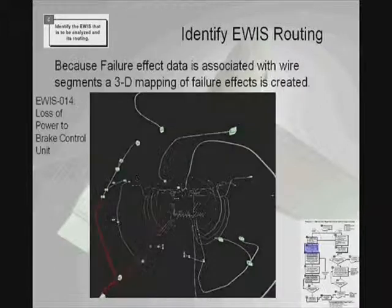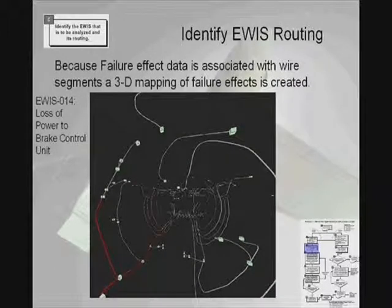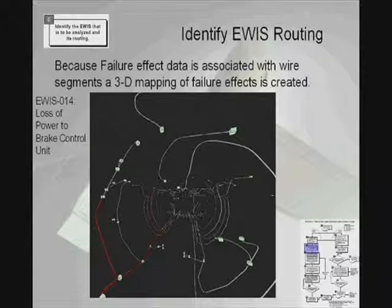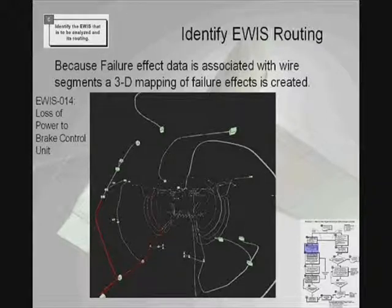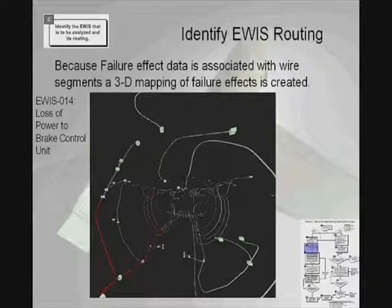Additionally, because failure effects are associated with the wires, the failure effects of these wires can also be visualized through the aircraft. Seen here, the fault defined as EWIS 014, which is a loss of power to brake control, runs in several bundle sections. This can also be used as a means of evaluating overlap between multiple failures.